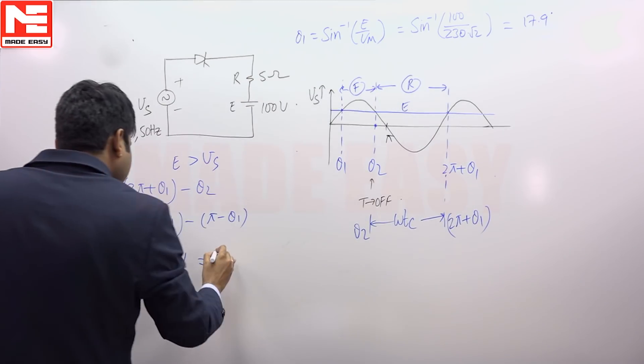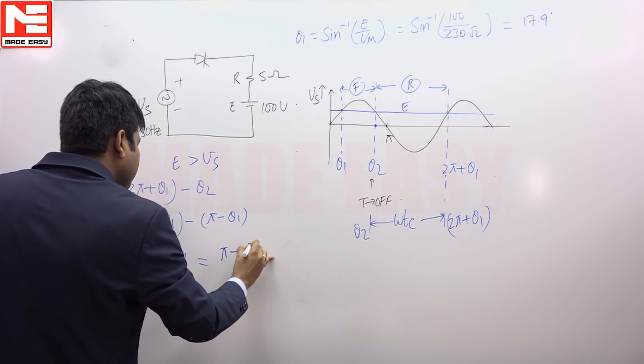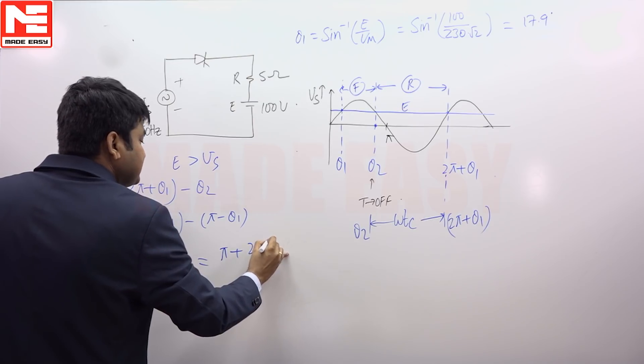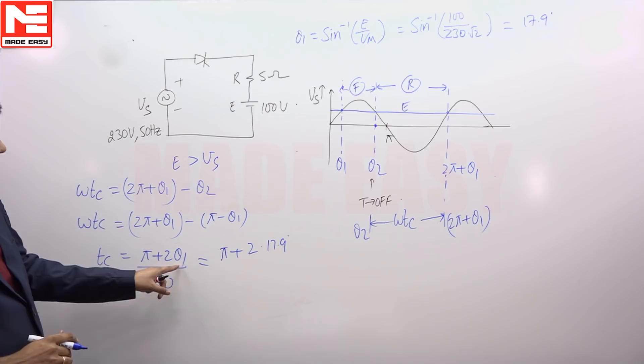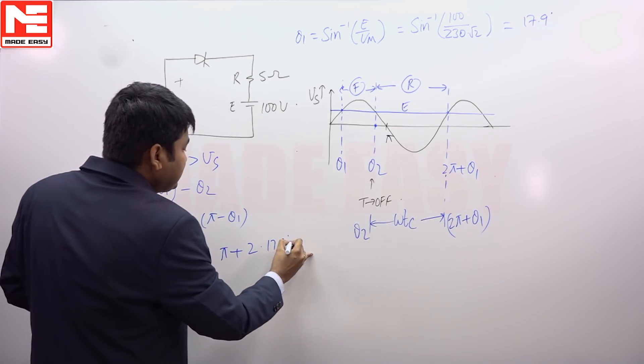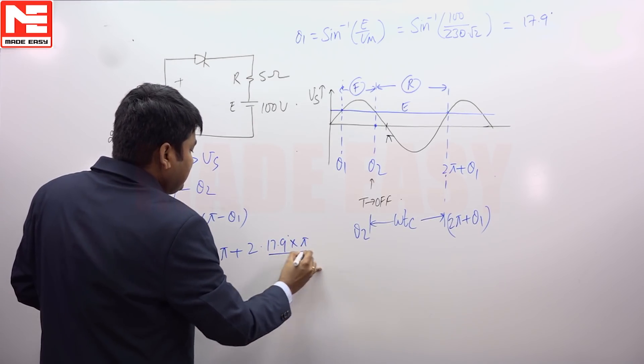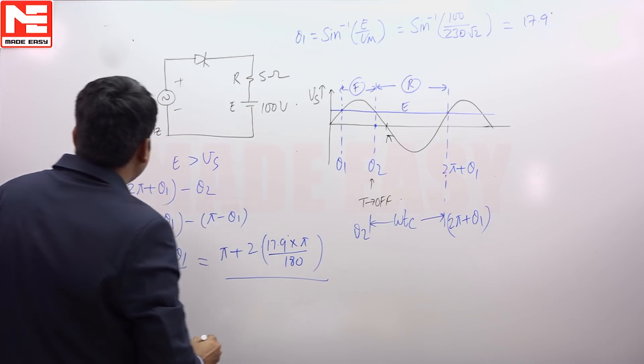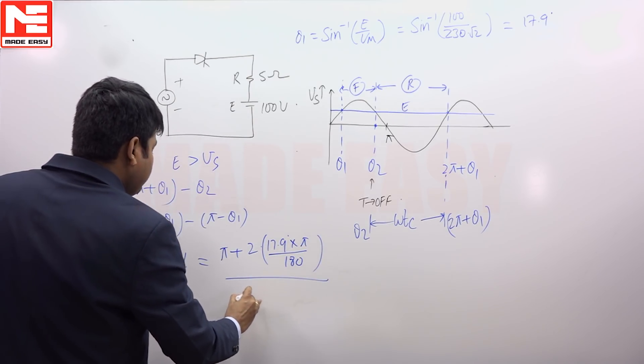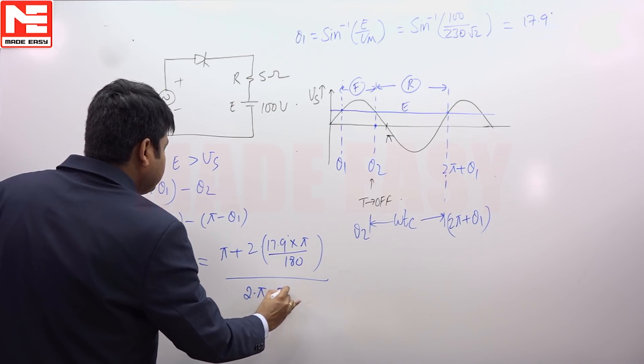Substitute here, you will get pi plus 2 times of theta 1 is 17.9 degree. But here theta 1 should be expressed in radians. So convert into radians, radians means into pi by 180 degrees. So pi plus 2 theta 1 by omega, omega is 2 pi into frequency is 50 hertz.